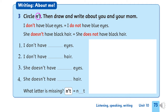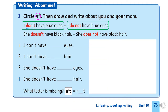Part three: Circle, then draw and write about you and your mom. You have to remember, 'don't' is the contraction of 'do not'. Now you look at this sentence: I don't have blue eyes. Don't — the long form is 'do not'. So we say the sentence with the long form: I do not have blue eyes.